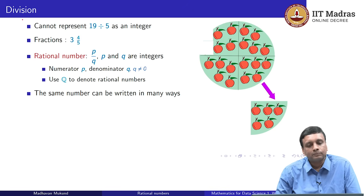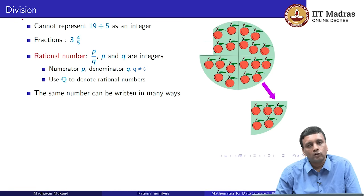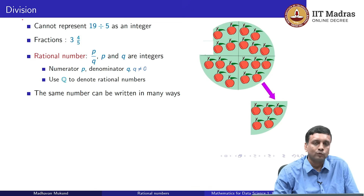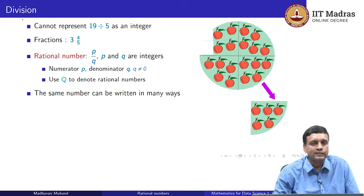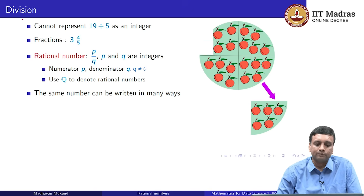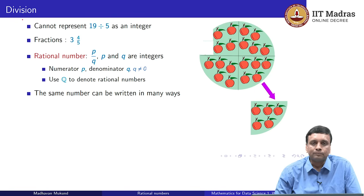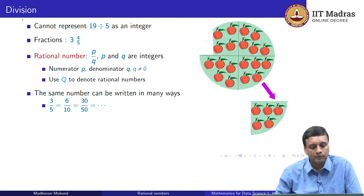One thing about the rational numbers is that the same number can be written in many different ways. This is not true of integers — if you write a 7, there is only one way to write 7 given a fixed notation. But with rational numbers, there are many ways of writing p by q that represent the same number.